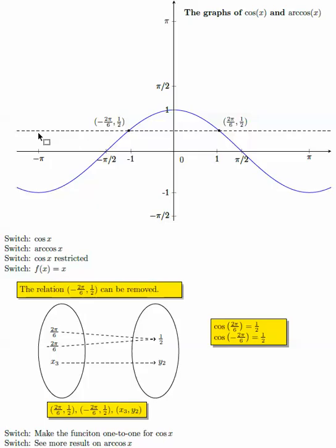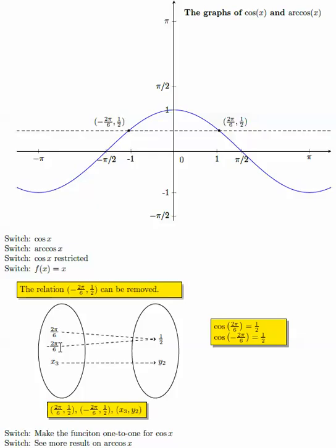Apparently, cosine x is not a one-to-one function. When you draw a horizontal line, it has more than one intersection. When x equals negative pi over 6, we have y equals 1 half. When x equals positive 2 pi over 6, we also have y equals 1 half. So those two different elements correspond to the same element 1 half.